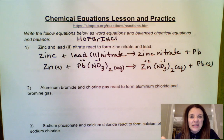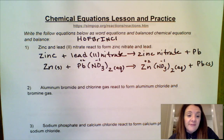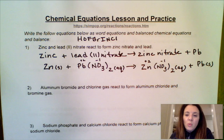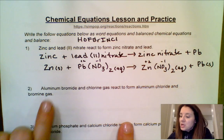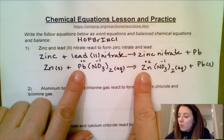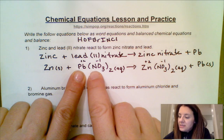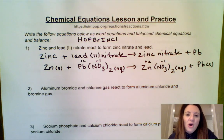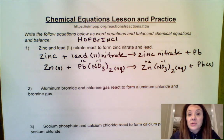On my periodic table, lead has a black symbol indicating it's a solid. Now I want to check if everything is balanced. I always leave oxygen and hydrogen to the end and balance everything else first. I have one zinc and one zinc; one lead and one lead; two nitrogen because that two applies, and two nitrogen on the right; six oxygen and six oxygen. So this is all balanced nicely — coefficients of one throughout, which we don't need to write in.